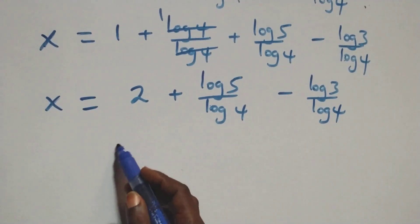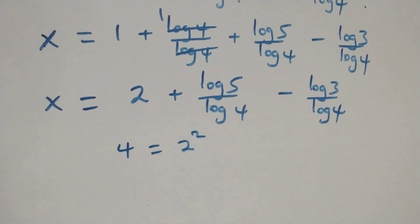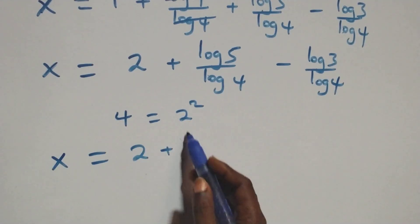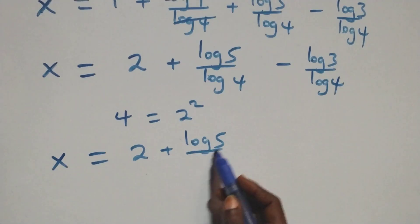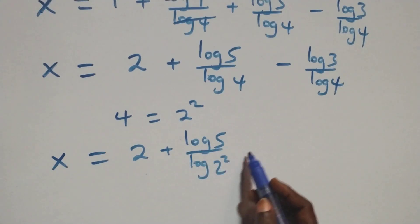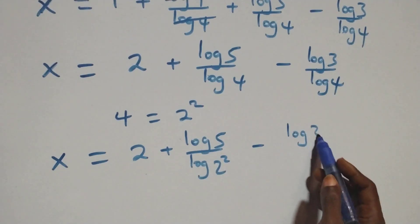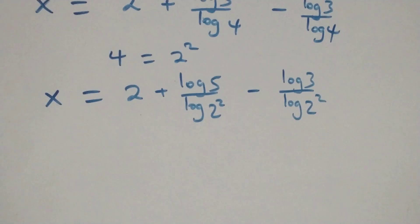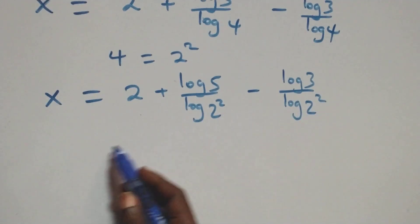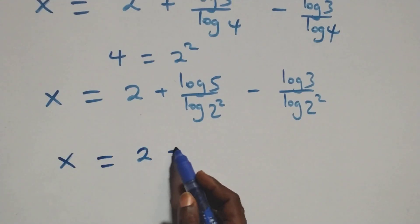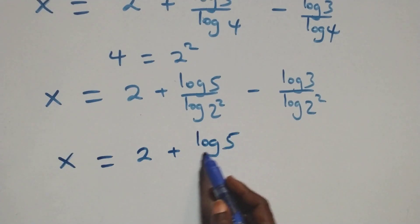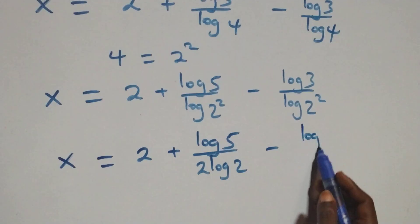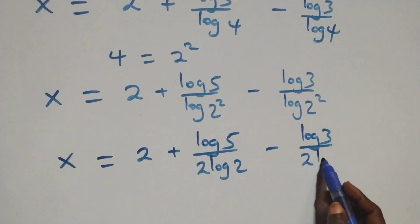Then here we can rewrite 4 as 2 squared, which implies x equals to 2 plus log 5 over log 2 squared minus log 3 over log 2 squared. Then we apply the power rule of logarithm, and we have x equals to 2 plus log 5 over 2 log 2 minus log 3 over 2 log 2.